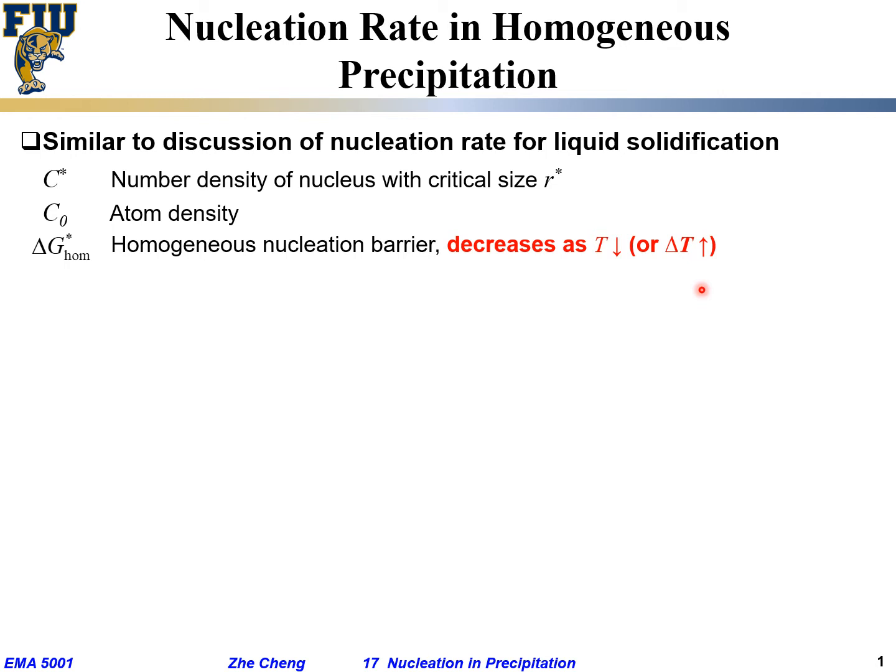Put another way, if you are just below the equilibrium temperature, your barrier height would be very, very large. And the relationship is what we learned before: C*, this critical nucleus concentration, would be the total atom concentration times this exponential factor. This exponential factor depends on temperature, depends on homogeneous nucleation barrier.